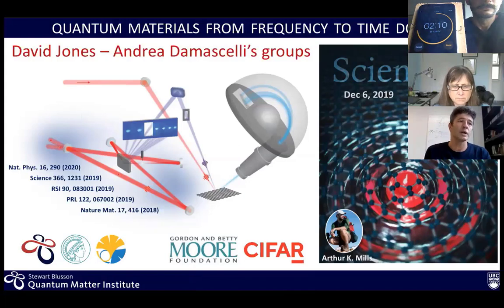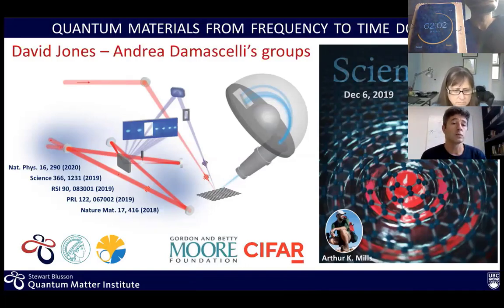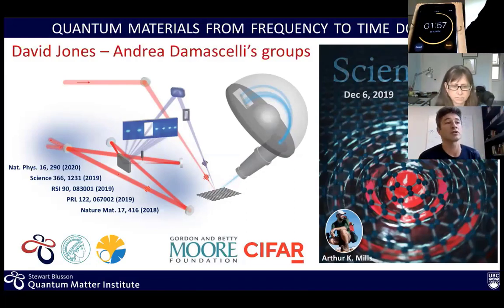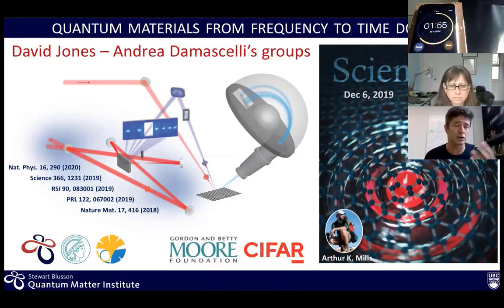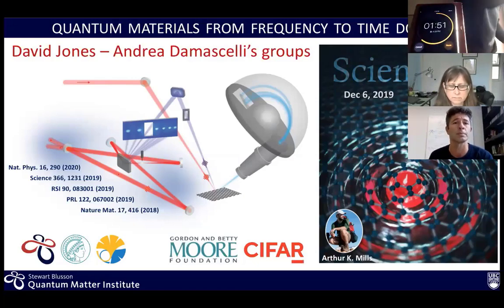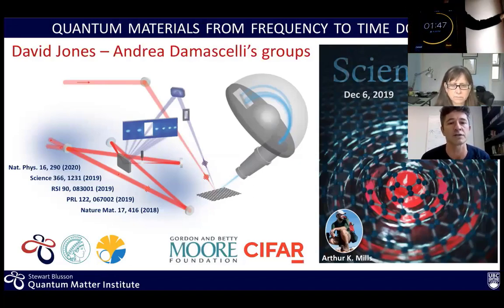In order to do that, we use a technique which is called angle-resolved photoemission spectroscopy, which is based on the photoelectric effect described by Einstein, which highlights the quantum nature of light but also the quantum nature of matter. Based on this effect, we shine light on a sample, the photons are absorbed by electrons, electrons are emitted, and we measure them with an analyzer that can collect the energy and look at the motion of those electrons.